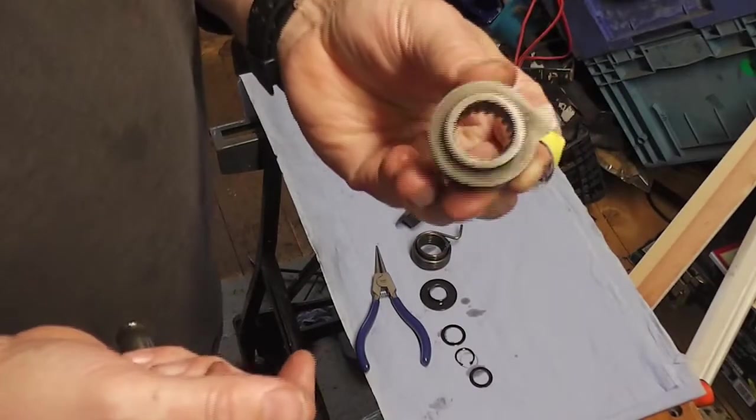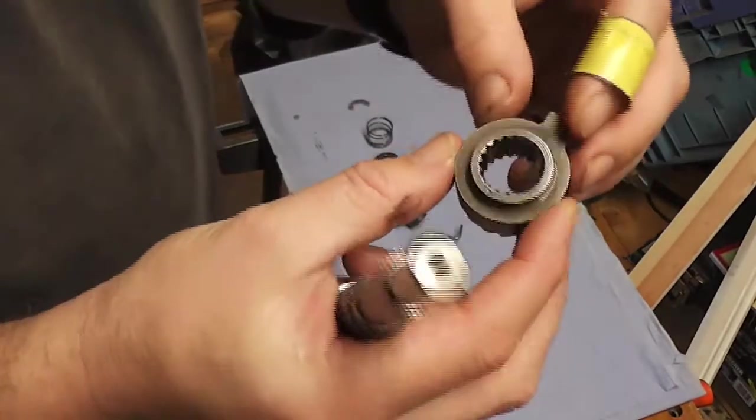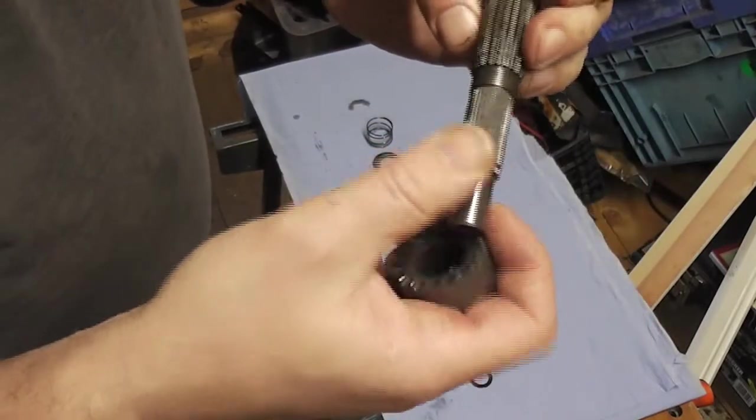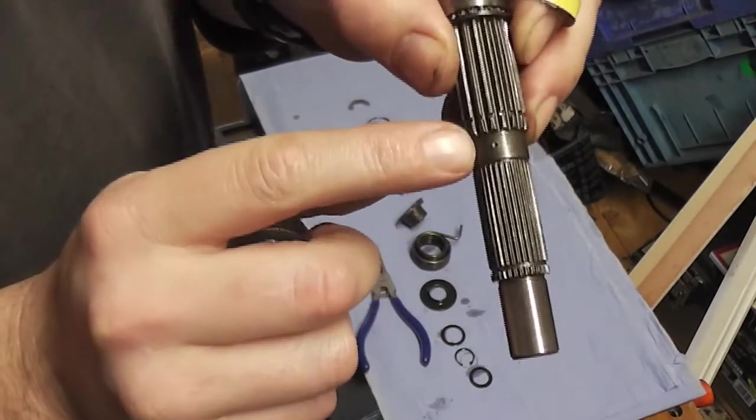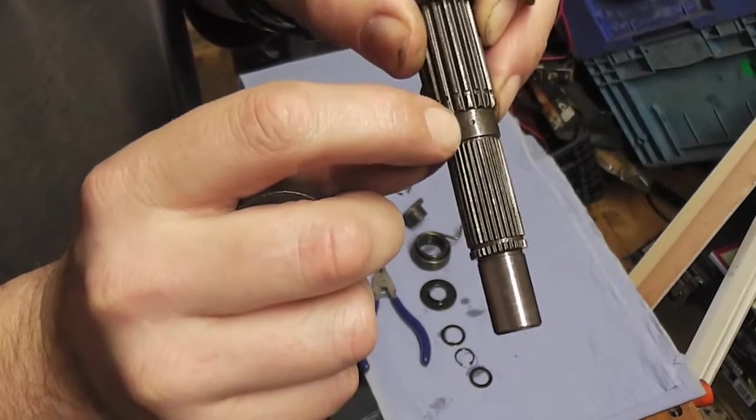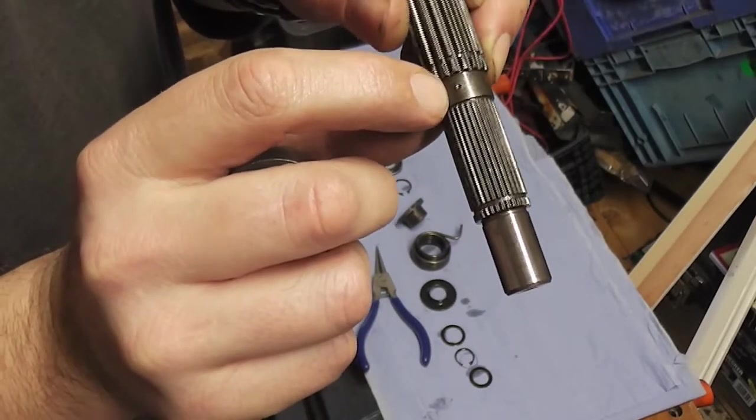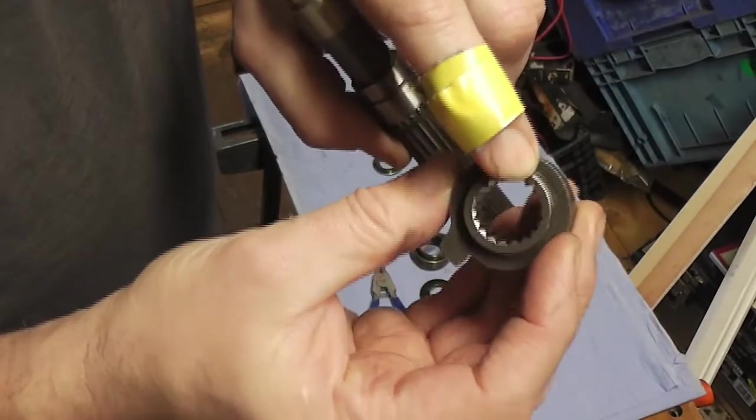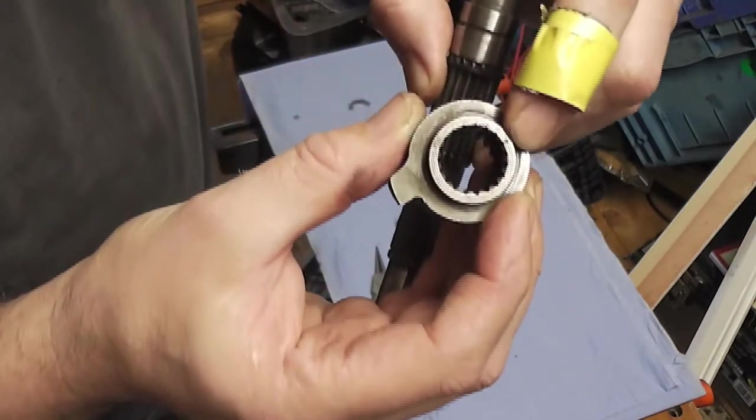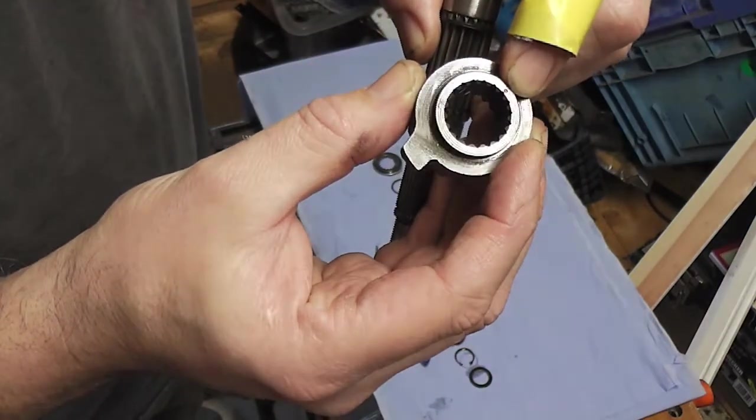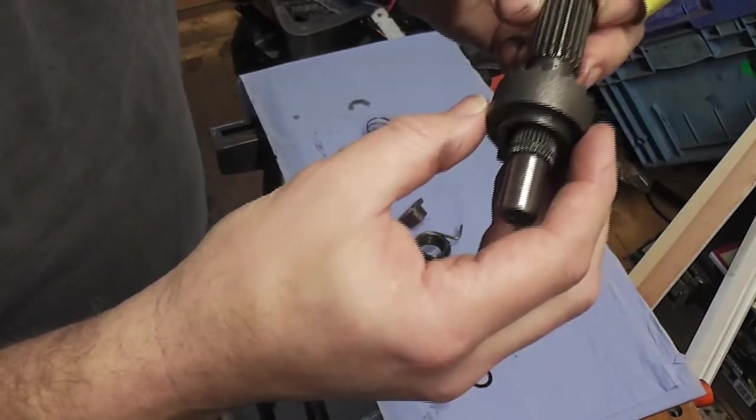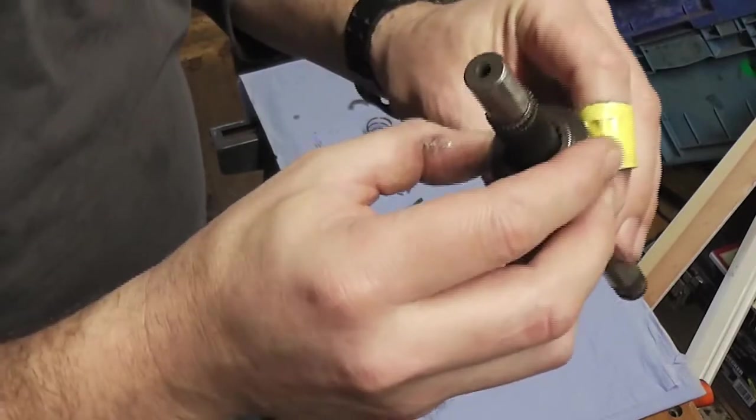Next is our kickstart. I don't really know what to call this. And this fits on these splines. This is important. See this dimple. I think you can see it there. That dimple has to line up with this dimple there. That is the important part about building your kickstart shaft. It has to line up.